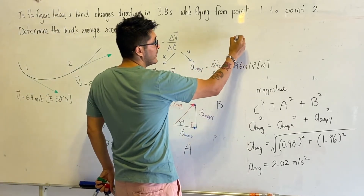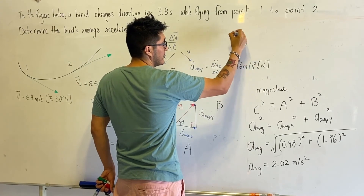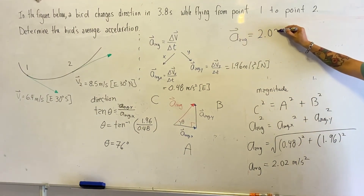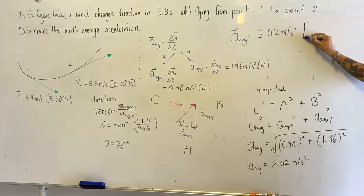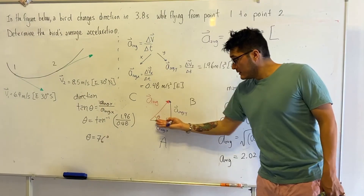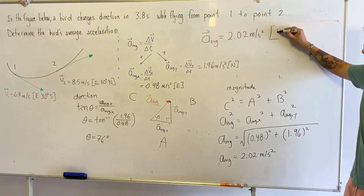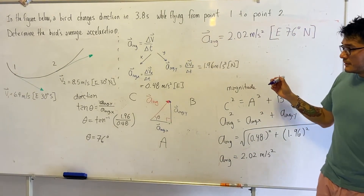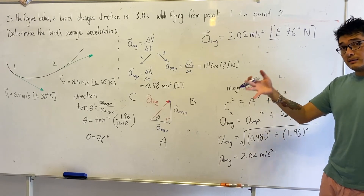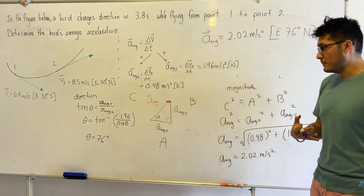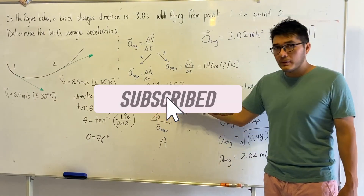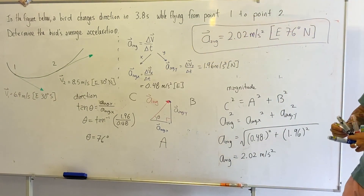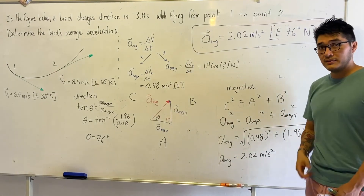Now write your concluding statement. The average acceleration is 2.02 m/s², and the direction is east 76 degrees north — starting from east, rotating 76 degrees toward north. You may find a different direction description depending on how you drew the components, but following this method — drawing x first then y — gives this final answer. Make sure you try it on your own for the best learning, and I'll see you in the next one.